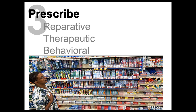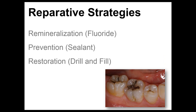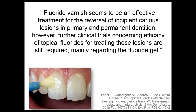Looking at what kind of therapy to provide: we have different options — reparative, therapeutic, and behavioral. Starting with remineralization with fluoride, then sealants — very important for a preventive approach — and then drill and fill, because you still need to place some restorations. My new patient this afternoon has multiple issues; I need to extract some root tips, plug the other holes, and maybe start using silver diamine fluoride. At some point we have to plug those holes — that's part of the therapy.